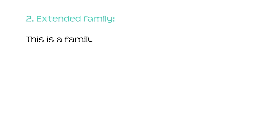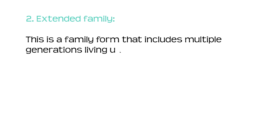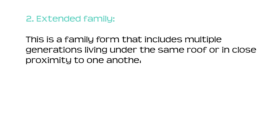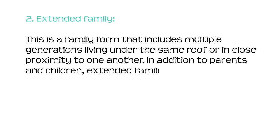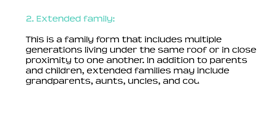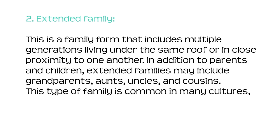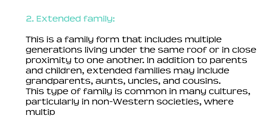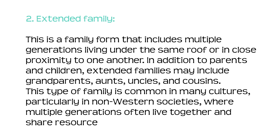Number two: the extended family. This is a family form that includes multiple generations living under the same roof or in close proximity to one another. In addition to parents and children, extended families may include grandparents, aunts, uncles and cousins. This type of family is common in many cultures, particularly in non-Western societies where multiple generations often live together and share resources.